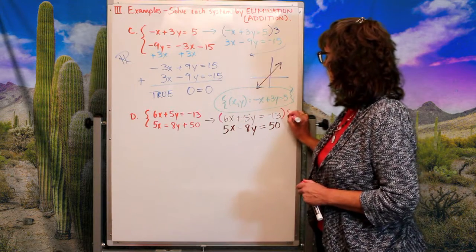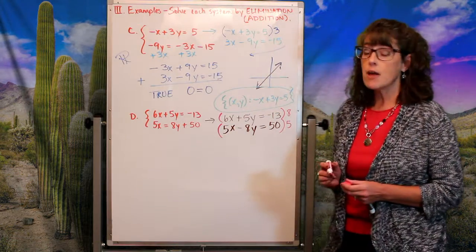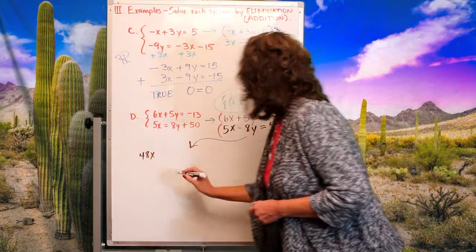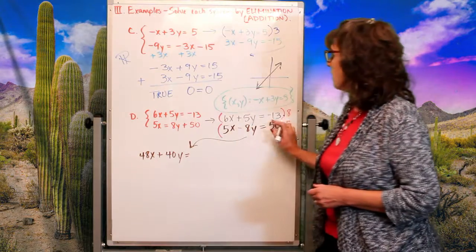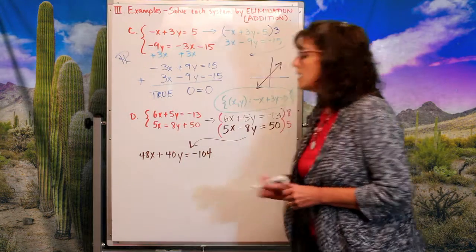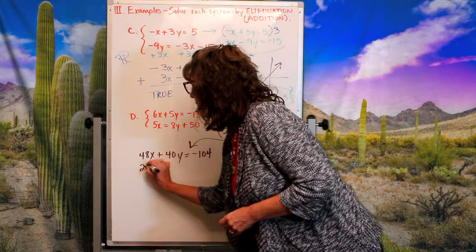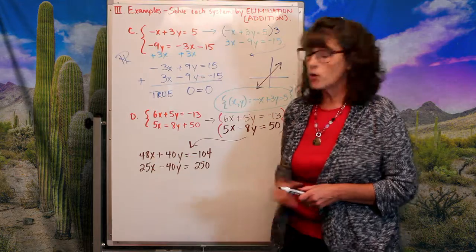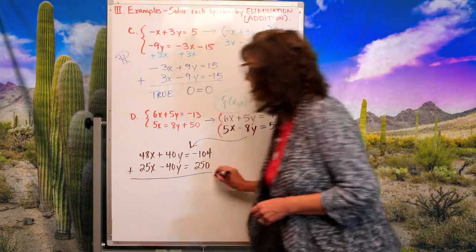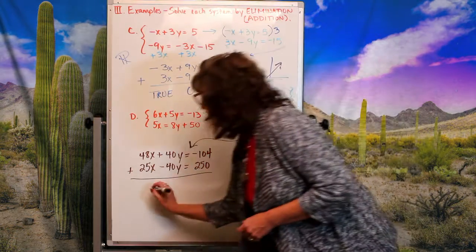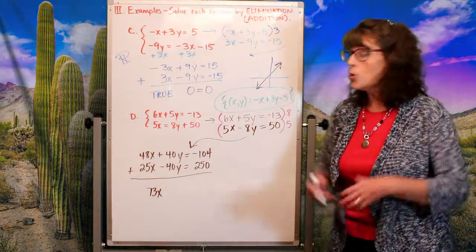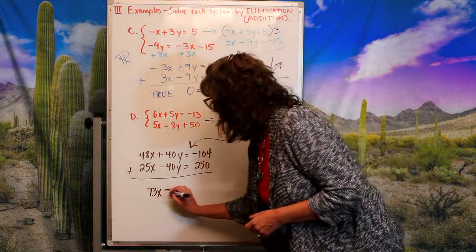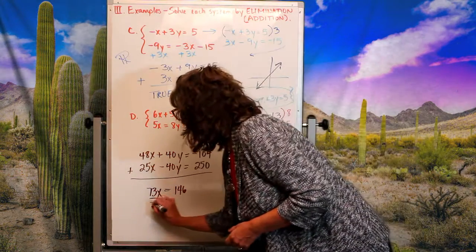I'll multiply the top equation by 8 and the bottom equation by 5. Multiplying the top by 8: 48x + 40y = −104. Multiplying the bottom by 5: 25x − 40y = 250. Now I have opposite coefficients on the y terms — I'm ready to add and eliminate.